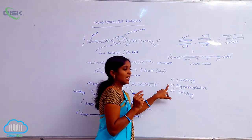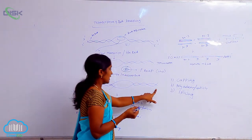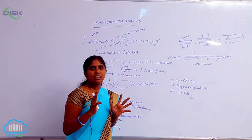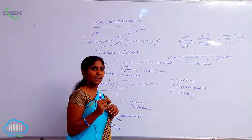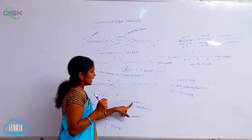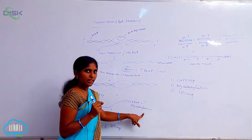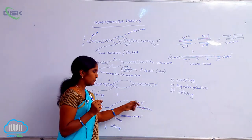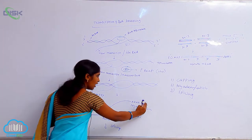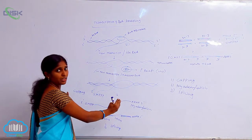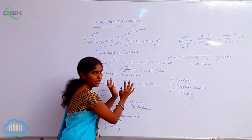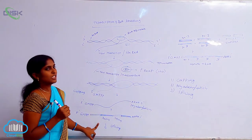At the 3' end, polyadenylation occurs — poly-A adenine nucleotides are joined to form the poly-A tail. So the hnRNA now has two modifications: one is the 5' cap joining at the 5' end, and the other is polyadenylation at the 3' end. The next step is splicing.